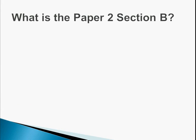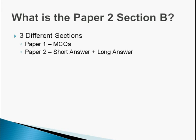So what is the paper 2 section B? It's composed of three different sections, the biology exam, and I'm going to take you through them individually. The first one is the multiple choice question of paper 1. The second paper is the short and long answer questions, with the third paper being the option paper.